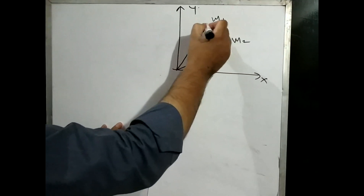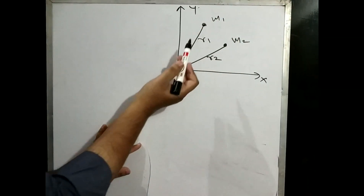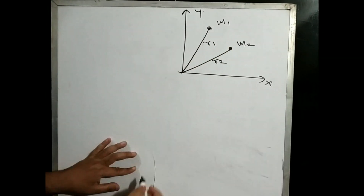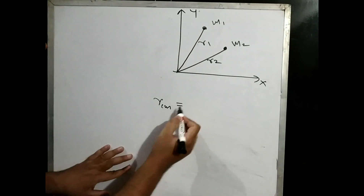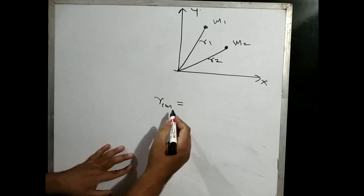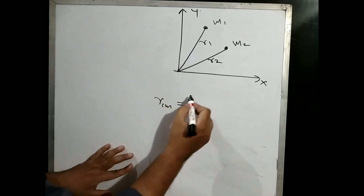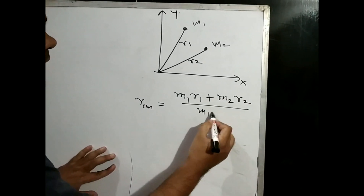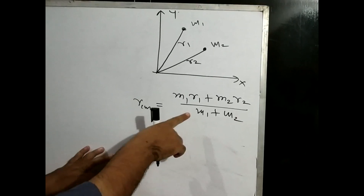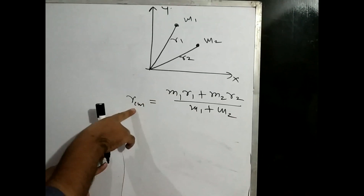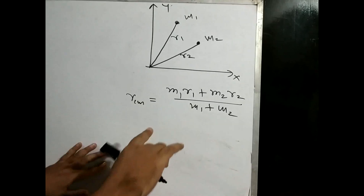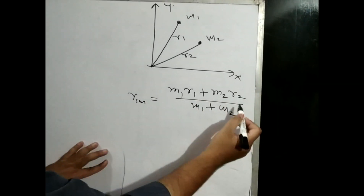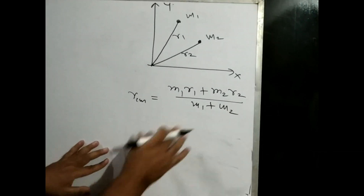Ab yeh dho particles ka jo system bana raha hai, is system ka pura ek center of mass hoga, yaha par beech mein kahi par. Us center of mass ki origin se distance kya hogi? So rcm, distance of center of mass from the origin, or position vector of center of mass. Toh generally hum likhenge: rcm = m1r1 plus m2r2 upon m1 plus m2. This is the formula of the position vector of center of mass for two particles. But if you want to consider three particles, then you will add m3r3 in the numerator and m3 in the denominator.